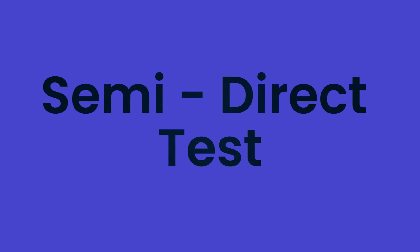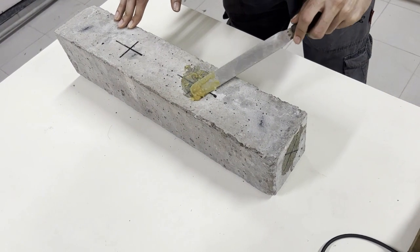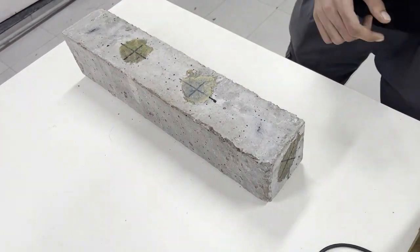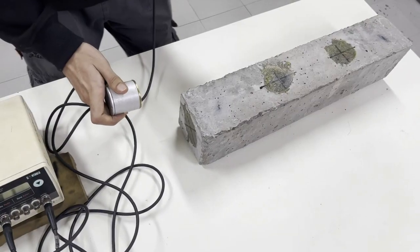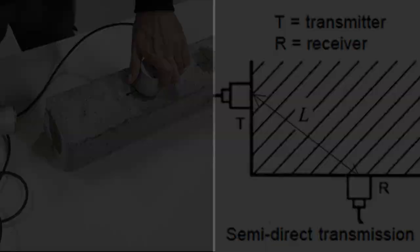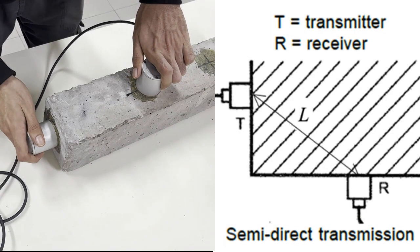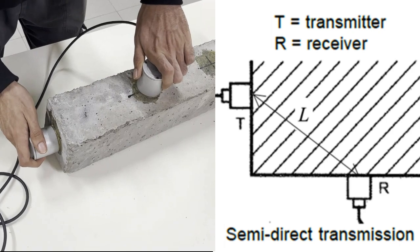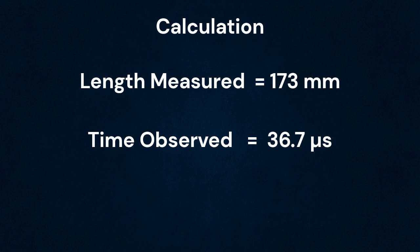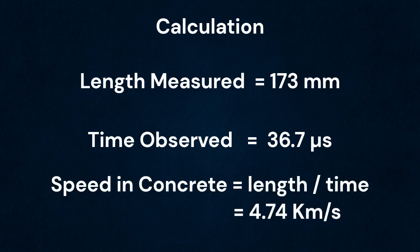Now we shall continue with the semi-direct test. In the semi-direct test, the transceiver and transducer are placed on the adjacent sides of the specimen. Observe and note the time taken for ultrasonic waves to pass through the specimen, and measure the direct length between the transducer and receiver. The calculated velocity is 4.74 km per second.